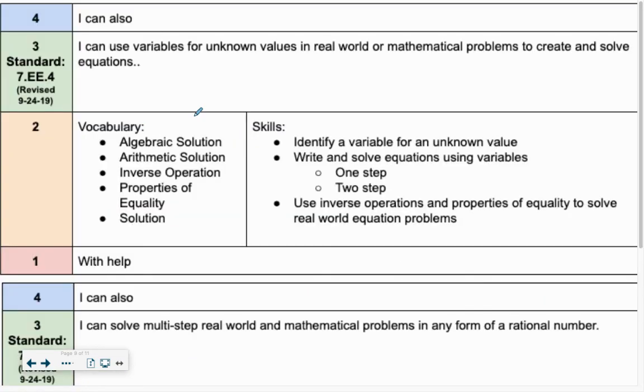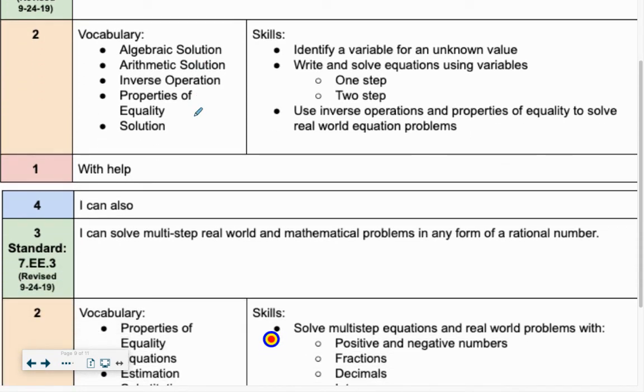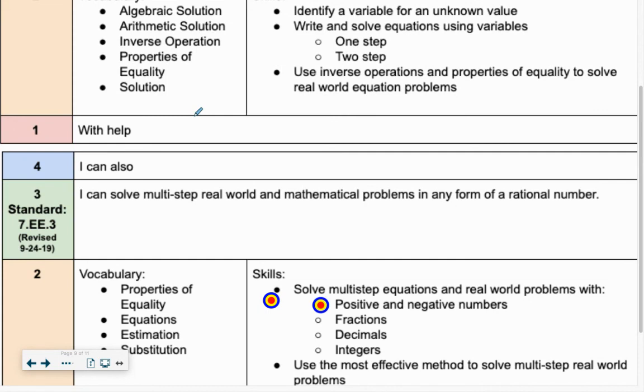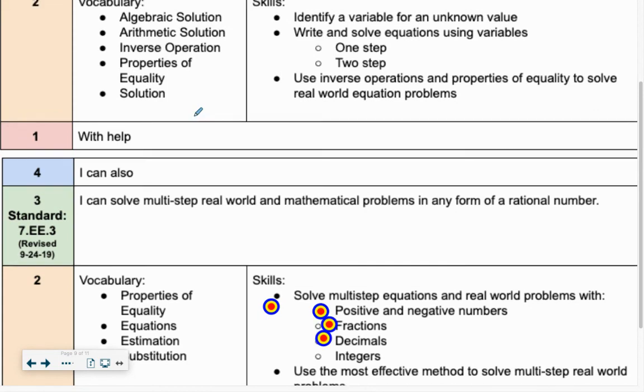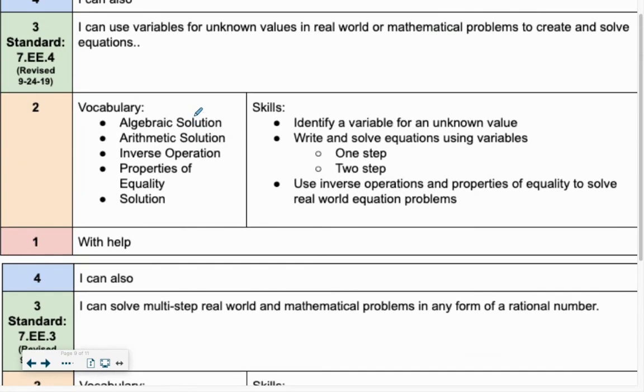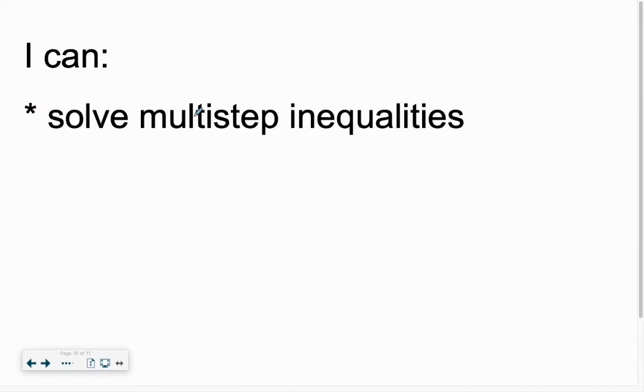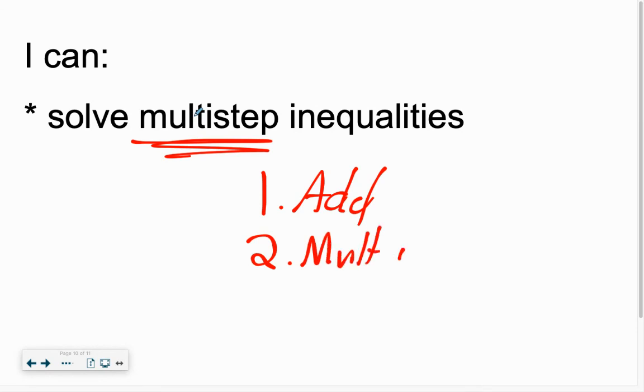Our standards: we want to be able to solve multi-step inequalities or equations, whether they have positives, negatives, fractions, decimals, or integers. Using variables, our word problems help us write and solve one-step and two-step inequalities or equations. We're solving multi-step, which means at least two steps. I need to see each time where Step 1 we added something and Step 2 you multiply or divide. Do not make answers magically appear. Show the work.